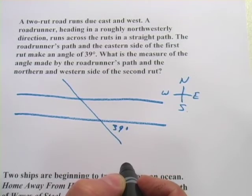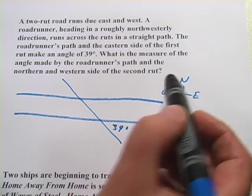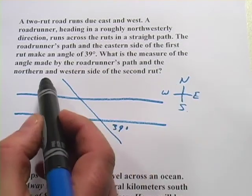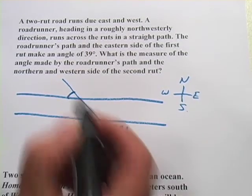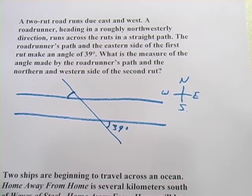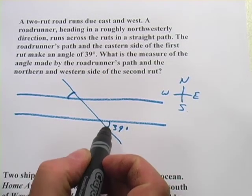And then it says, what is the measure of the angle made by the roadrunner's path and the northern and western side of the second rut. So the northwestern side is going to be over here, second rut, so it would be that one right there.